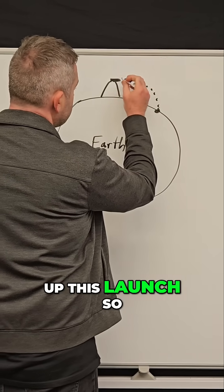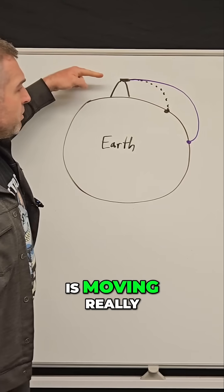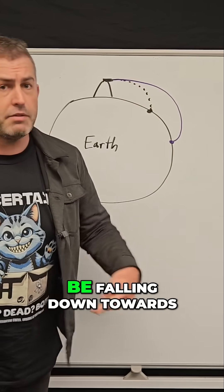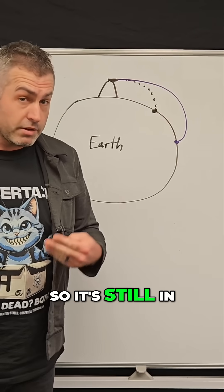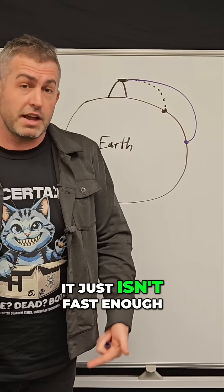Now imagine we speed up this launch, so it goes even faster. Well, even though the cannonball's moving really, really fast, it still has to be falling down towards the planet, so it's still in free fall, and eventually it will hit the ground because it just isn't fast enough.